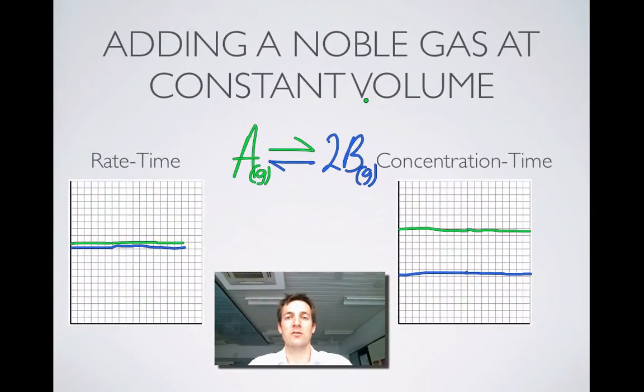So again, just to reiterate that, if we add a noble gas at constant volume, there's going to be no effect on our equilibrium system. Because the concentrations or the pressures of the things that can react haven't changed. Nothing's really changed as far as they're concerned. There's just this other gas in the box now which can't react with anything.